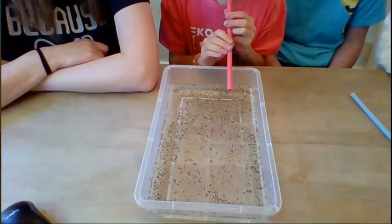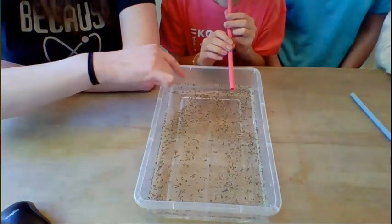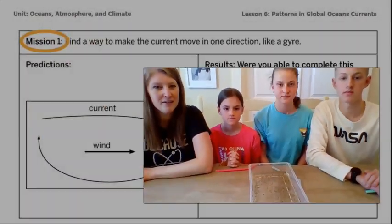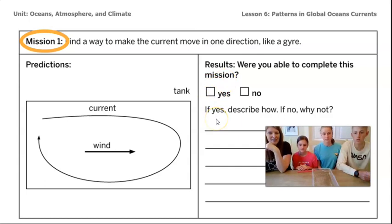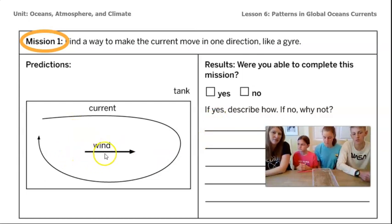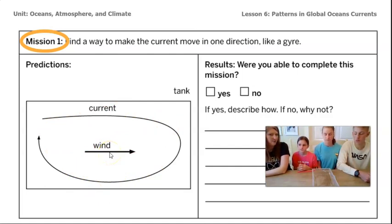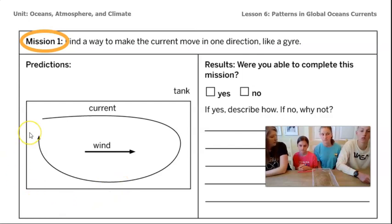Do we have a gyre, Jacob? Yeah, there's a big gyre here. That looks great. Do you think we were able to complete this mission? Yeah, we were — we could check off yes. When Charlotte first started blowing down the middle, we saw a current forming along the bottom and also one along the top. How did you adjust the wind to make just one big giant gyre? I went on one half side of the tank. She moved her straw to one side and started blowing there so it could go all the way around, and we were able to successfully do it.